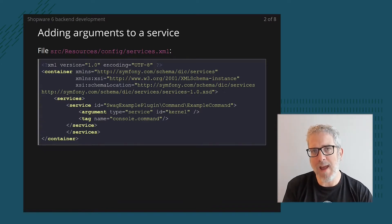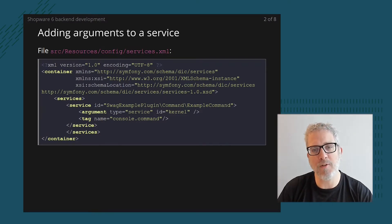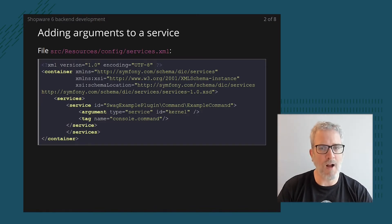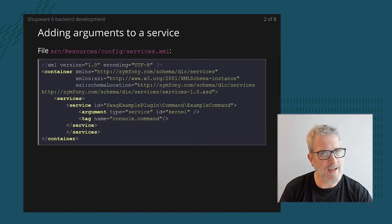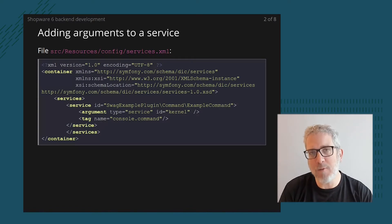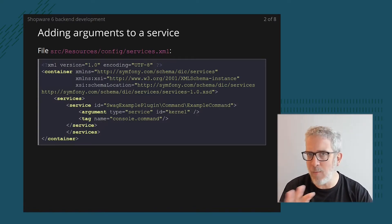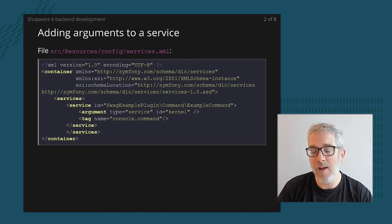Earlier we created a services.xml file, and as soon as we want to add a new dependency to a specific service we need to extend that services.xml file. For instance, for the service of our command — which we already tagged as a console.command so that Symfony's command line can detect our class — we're now going to add an argument. For now we'll stick to an argument of type service, and specifically this example will use a service with id kernel.